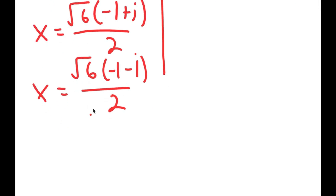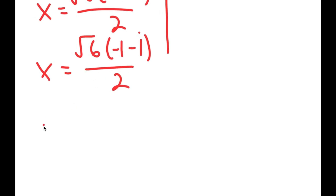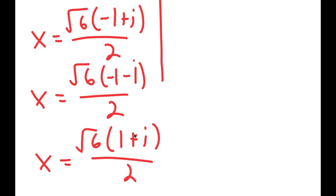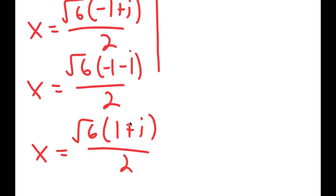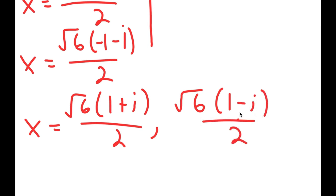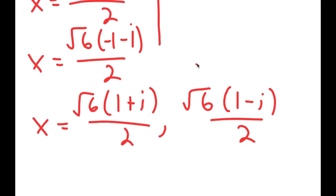Along with this, you should also get x is equal to the square root of 6 times 1 plus i, over 2, and x is equal to the square root of 6 times 1 minus i, over 2. So these are your four solutions.